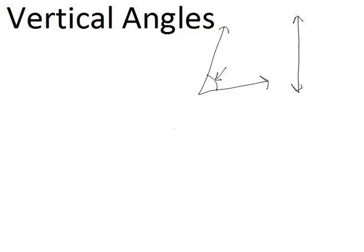So vertical angles are formed when you have two intersecting lines. And anytime you have one pair of vertical angles, you'll have another pair. So they always come in sets of two.